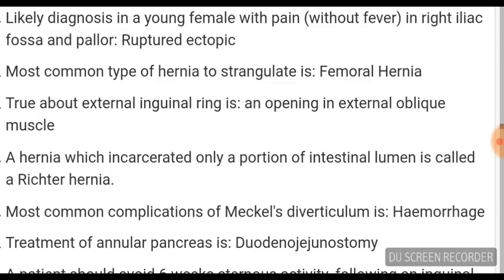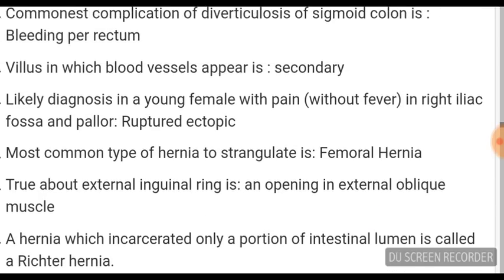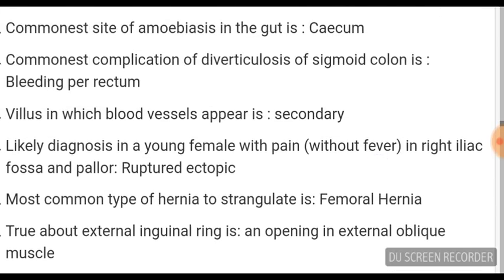True about the external inguinal ring is that it is an opening in the external oblique muscle. The most common type of hernia to strangulate is femoral, due to its small size.